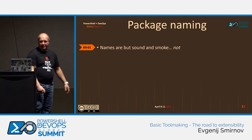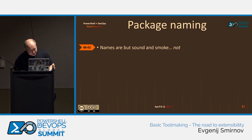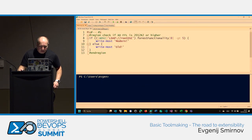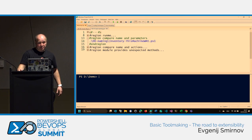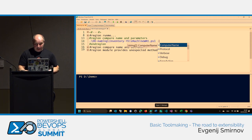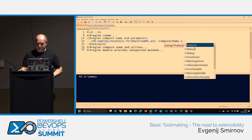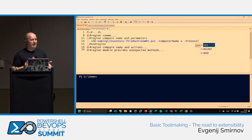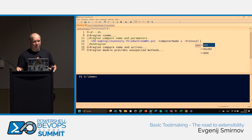Package naming. Goethe says names are but sound and smoke — 'Namen sind Schall und Rauch.' This is not true for PowerShell packages. I have a script here called 'inventory-this-machine-WMI.' You probably have a pretty good understanding of what the script is going to do. But it takes an array of computer names, which sort of contradicts 'this machine.' And it goes further — there is a protocol parameter that will accept WMI but also two further protocols. So this is bad naming, bad usability — usability fallen victim to extensibility.